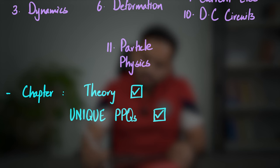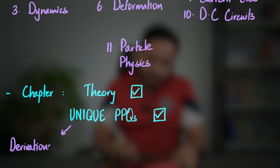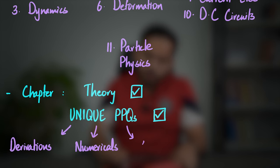In AS Physics, every question in Paper 2 is essentially unique — they are not repeated. MCQs, however, are repeated exactly. When doing questions, you'll develop a sense of similarity between questions — same formula usage or same variable being tested. Try to avoid doing too many similar questions. Instead, spread your practice across derivations, numericals, and graph-based questions to get as wide a variety as possible.